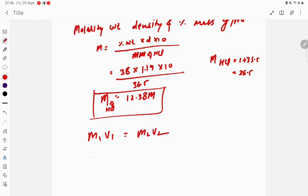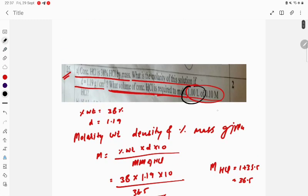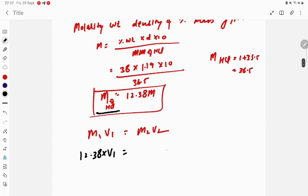Apply M1V1 equals M2V2. This molarity is 12.38 into volume, and the final values are 1 liter and 0.1 molar. So 1 liter means 1000 ml and the molarity is 0.1 molar.